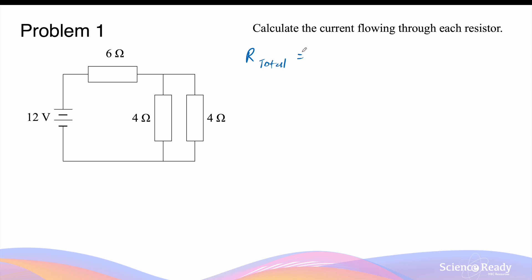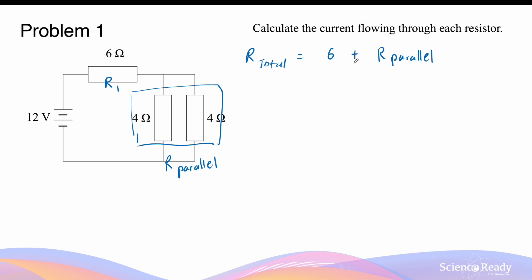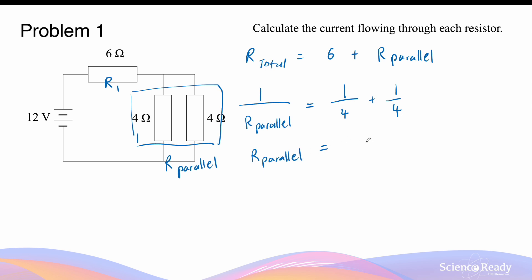Once we identify the components, we find the total resistance of the circuit. The total resistance equals the resistance of the first resistor R1 — which is 6 ohms — plus the total resistance of the parallel circuit, R_parallel. We add them because R1 is in series with the parallel section. To find R_parallel, we use the reciprocal formula: 1 over R_parallel equals 1 over 4 plus 1 over 4, which gives a parallel resistance of 2 ohms.